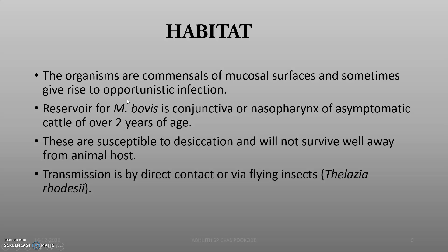The organisms are common commensals of the mucosal surfaces and sometimes give rise to opportunistic infections — whenever they get more chance to produce infection, they will produce it; otherwise they act as commensal organisms. They live in the conjunctiva and the nasopharyngeal region, producing asymptomatic reactions that can prolong up to two years. Transmission is by direct contact, or sometimes Thelazia rhodesi (the eye worm) can also transmit the infection.